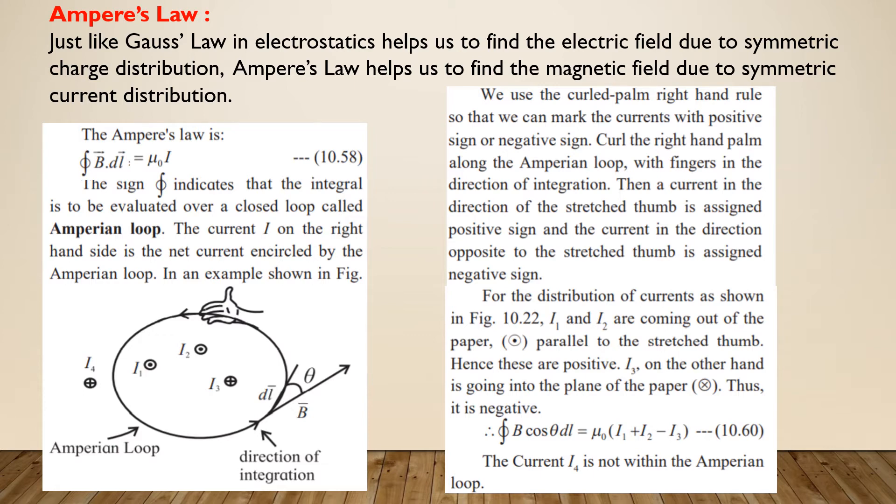With this rule, for above example, I1 and I2 are positive, while I3 is negative. The current I4 being outside the loop does not contribute to the integration.